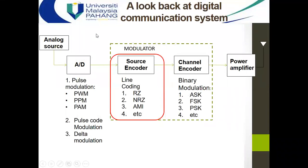This is actually the summary of digital modulation. In our last lesson we discussed about pulse code modulation and pulse modulation, mainly amplitude modulation. Today's focus is here — source encoding, which means using line coding.